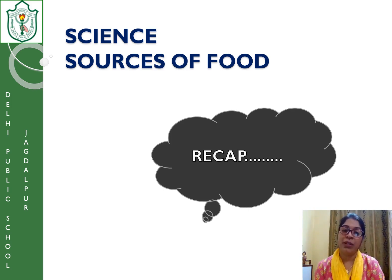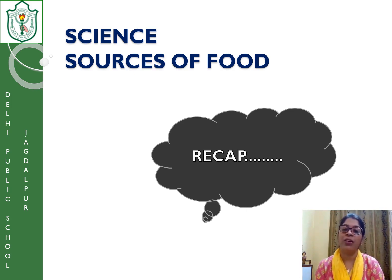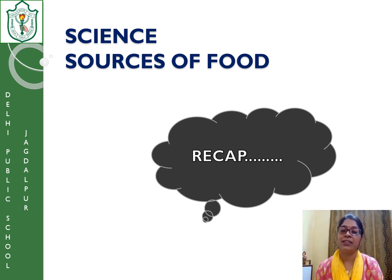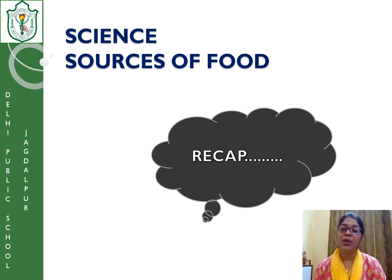What we have done in the previous class, let's recall it. We have done the definition of food, the definition of nutrient, the functions of food, and why we eat food. We have also learned about ingredients — whenever we cook any food item, we add a number of components to it and then only a kind of dish gets ready.